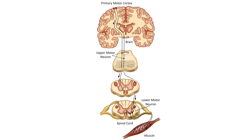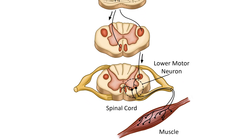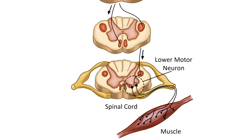Lower motor neurons connect to the central nervous system and carry impulses to and from muscles and glands. Signs of lower motor neuron dysfunction include weakness, wasting, fasciculations or twitching, and an absence of reflexes.